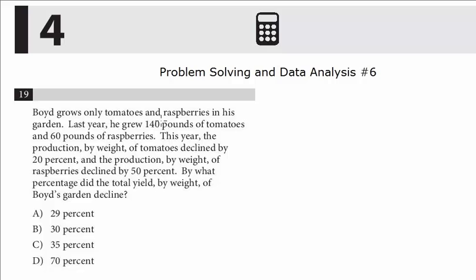Boyd grows only tomatoes and raspberries in his garden. Last year he grew 140 pounds of tomatoes and 60 pounds of raspberries. This year the production by weight of tomatoes declined by 20% and the production by weight of raspberries declined by 50%. By what percentage did the total yield by weight of Boyd's garden decline?